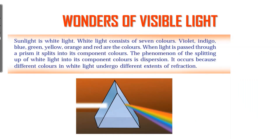Next is dispersion of light. There are some colors. We can remember them as VIBGYOR: Violet, Indigo, Blue, Green, Yellow, Orange, Red. Light is split into these constant colors — that is why we use dispersion.